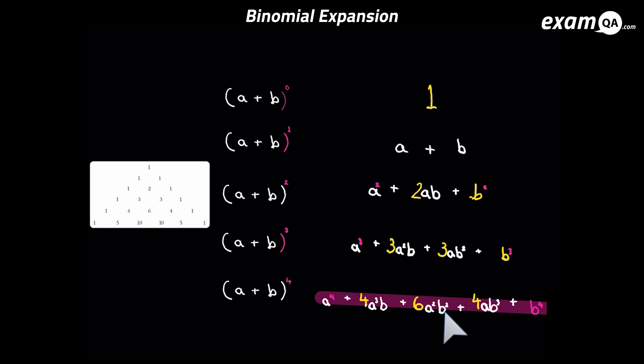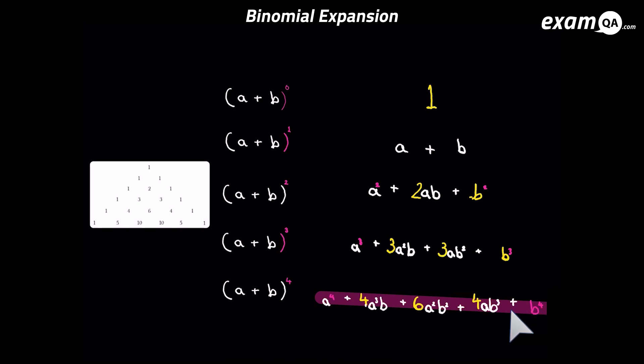In the next term, a's power goes further down by one and becomes a to the power of one, or just a, and b's power is rising so b's power is now three. Finally, a's power has gone to zero — meaning it's not even there, because anything to the power of zero is one — and b's power has gone up to four in the last term. That's the pattern with the a's and the b's and the powers, and we also know the coefficients came from Pascal's triangle.